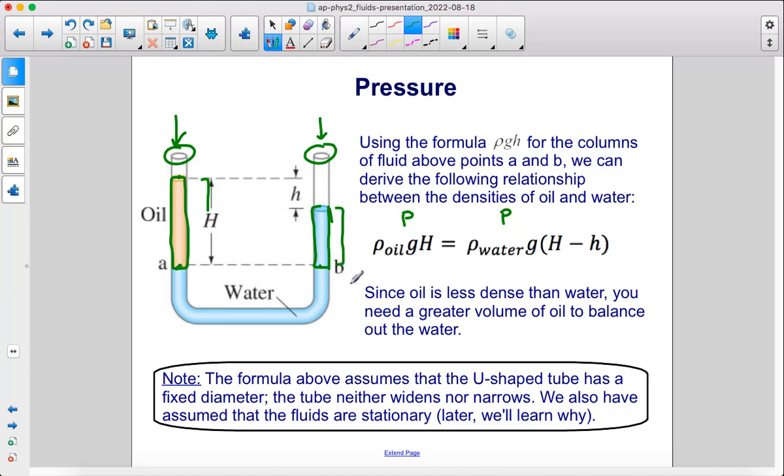Since oil is less dense than water, you need a greater volume of oil to balance out the water. Note the formula above assumes that the U-shaped tube has a fixed diameter, right? So we have the same diameter for both of these sides. The tube neither widens nor narrows. We also have assumed that the fluids are stationary. And later we'll learn why that's important.